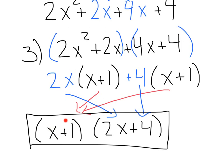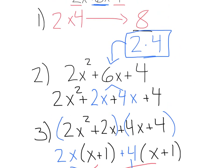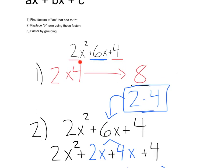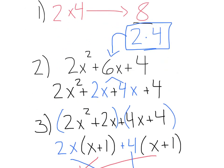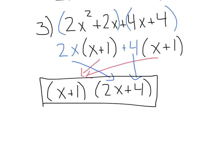And if you wanted to check, you could distribute everything out, and it should bring you right back to where you started at this 2x squared plus 6x plus 4. Let's go ahead and try a couple more examples.